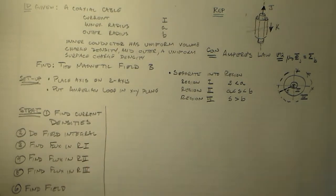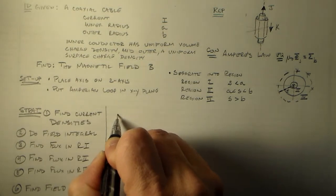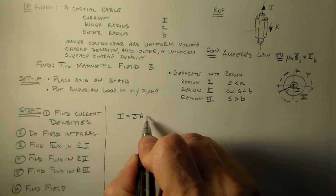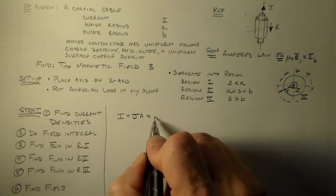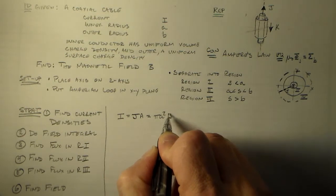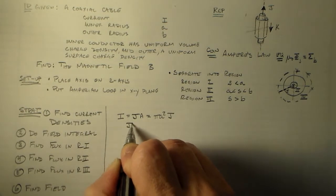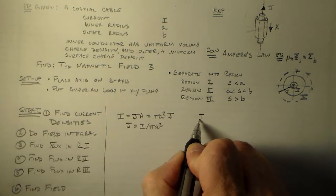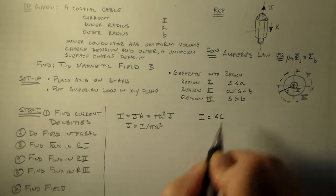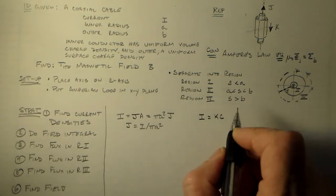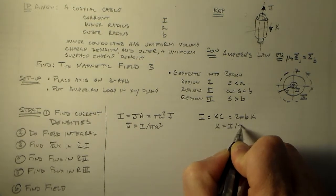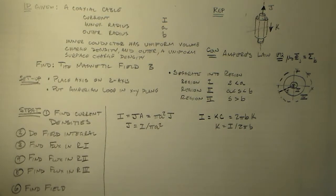For the current densities: I equals J times the area of the inner wire, which is π·a², so J = I / (π·a²). For K, I equals K times the circumference of the outer conductor, which is 2π·b, so K = I / (2π·b). Simple enough — now we have those expressions whenever we need them.